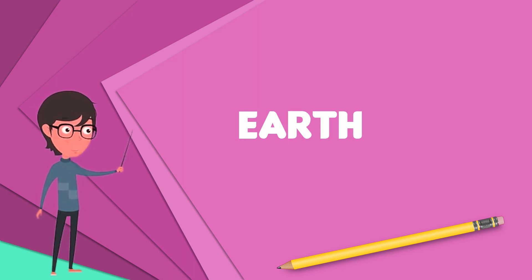In the history of the Earth, biodiversity has gone through long periods of expansion, occasionally punctuated by mass extinction events. Over 99% of all species that ever lived on Earth are extinct.